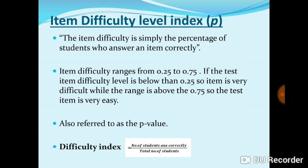The difficulty level index is denoted by P, also called the P-value. The formula to find the difficulty index is: take the number of students who answered correctly divided by the total number of students.